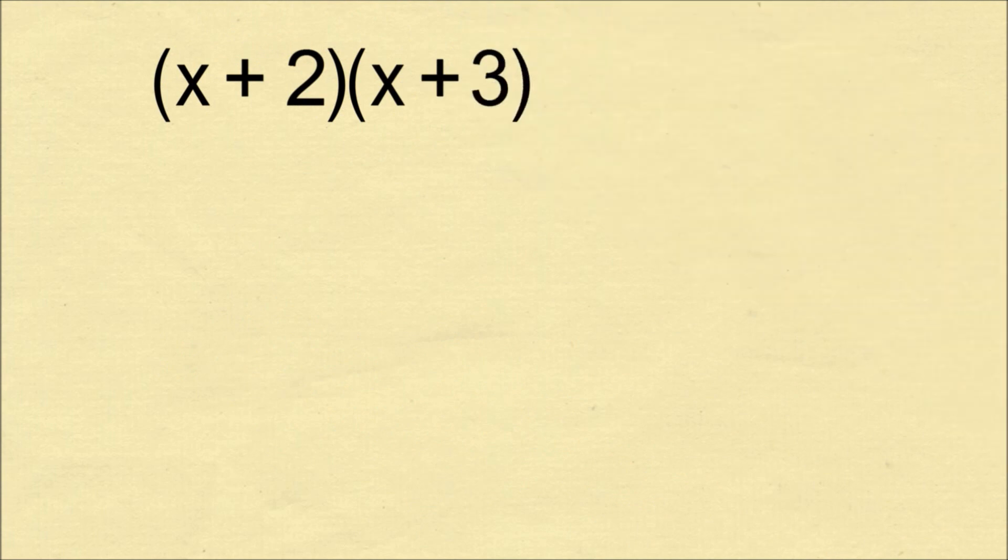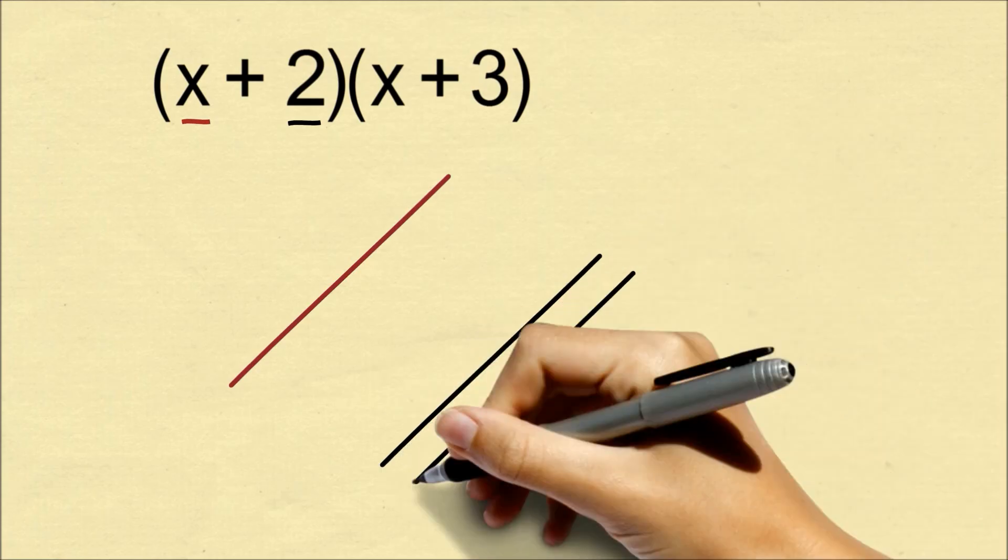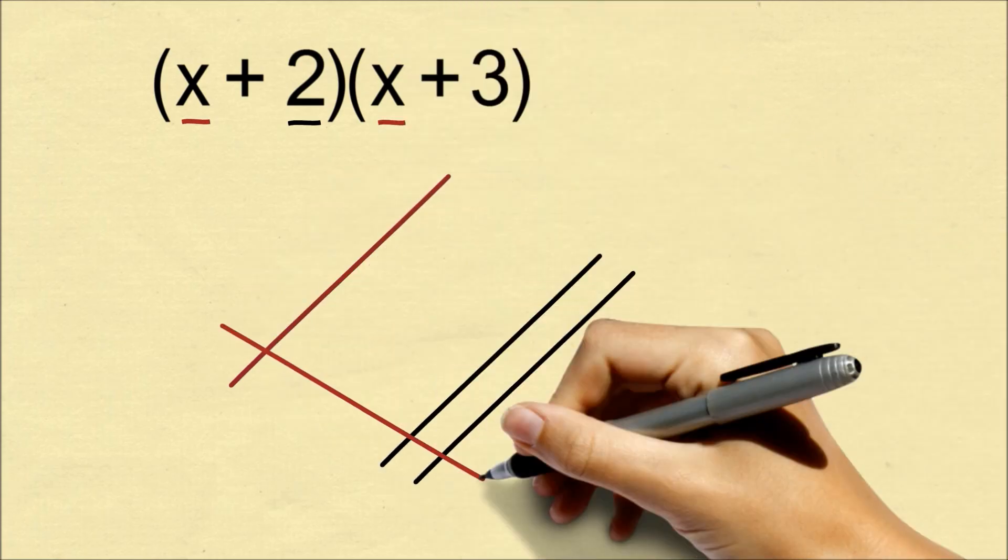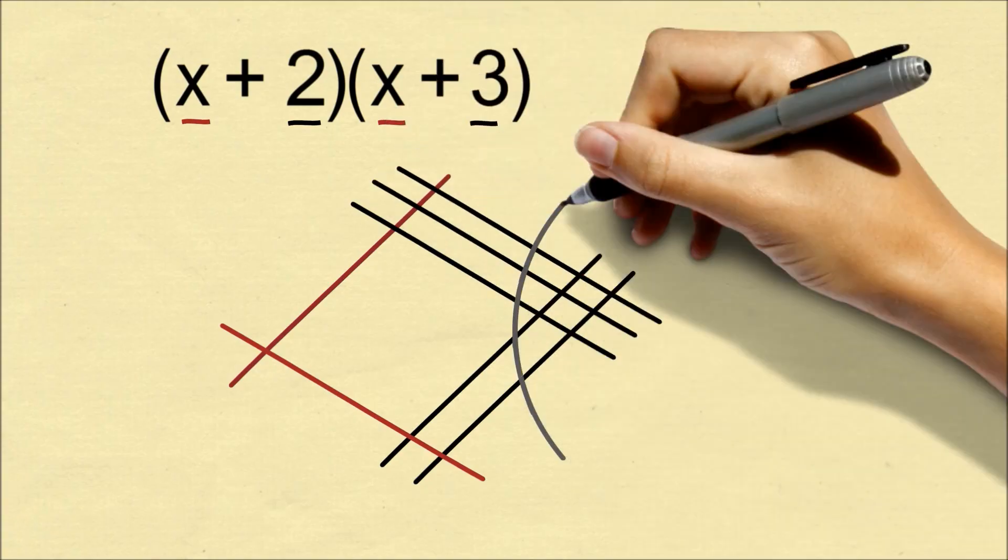We can also do polynomial expressions, x plus 2 times x plus 3. We will draw the lines for x in a different color. Now we group the vertically aligned intersections.